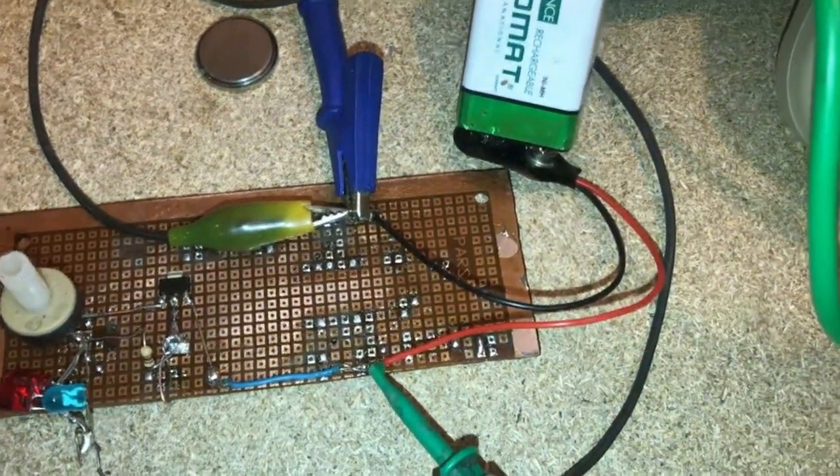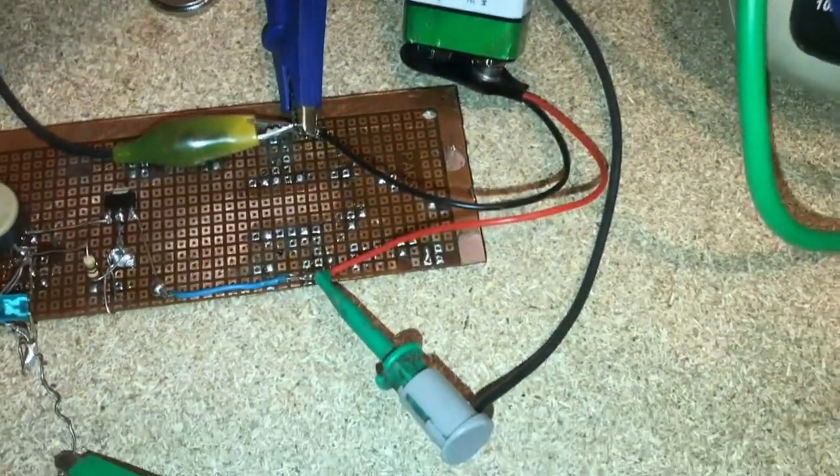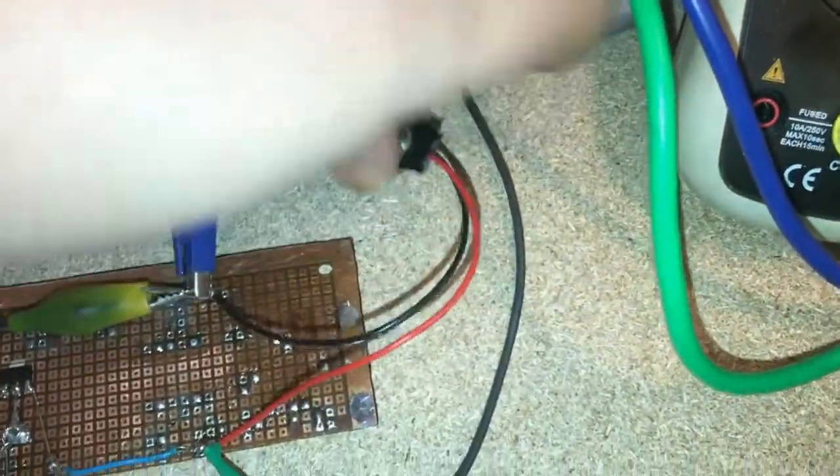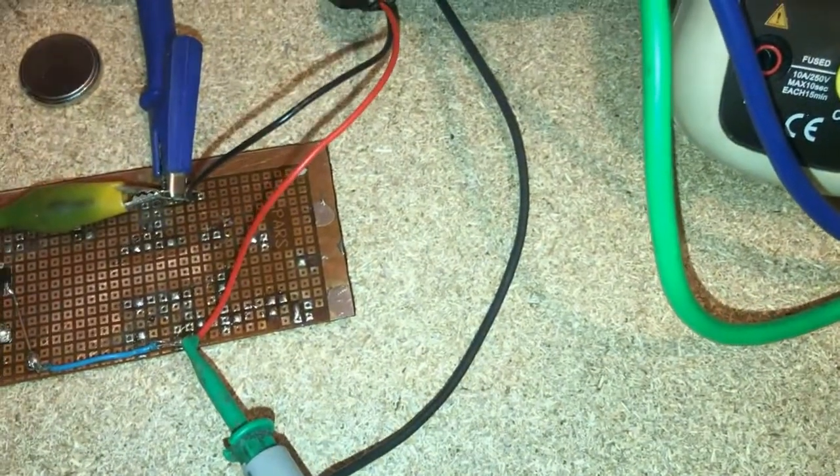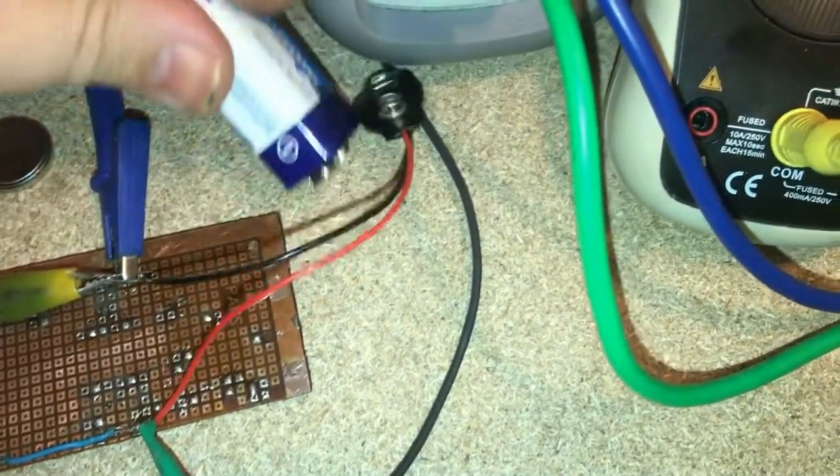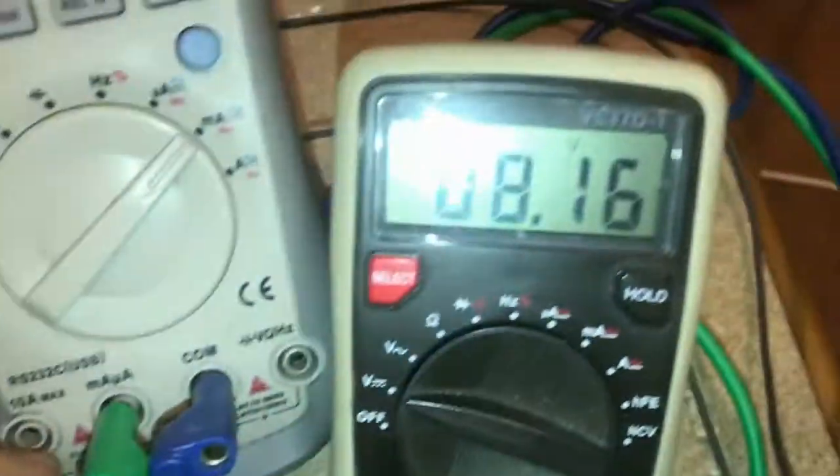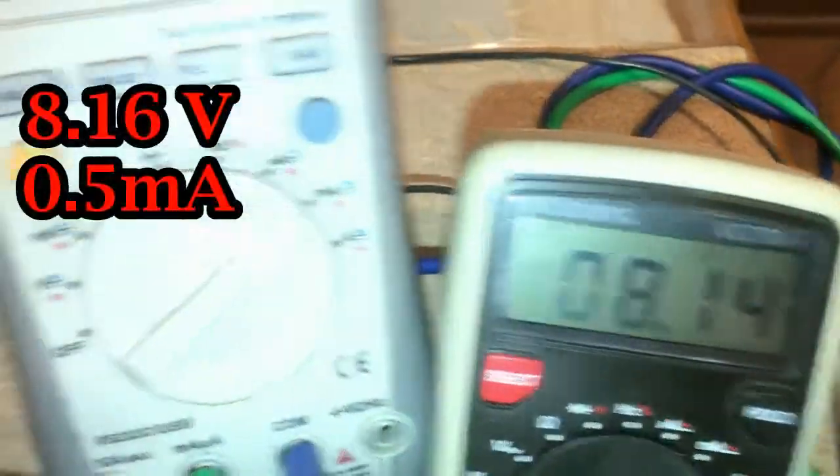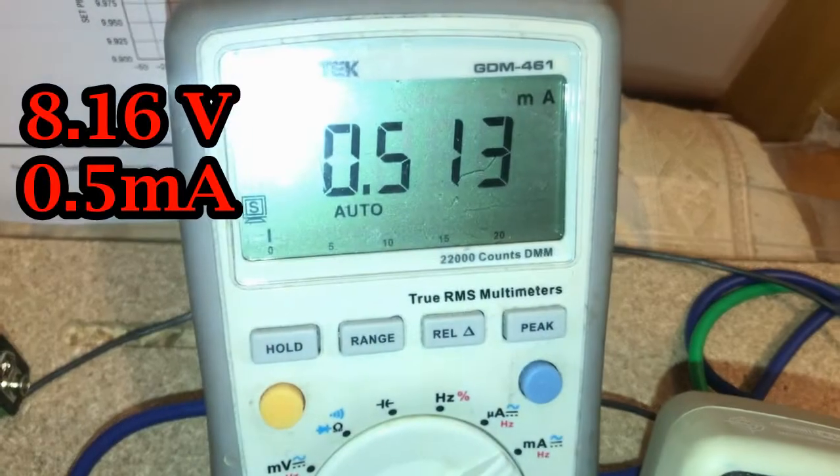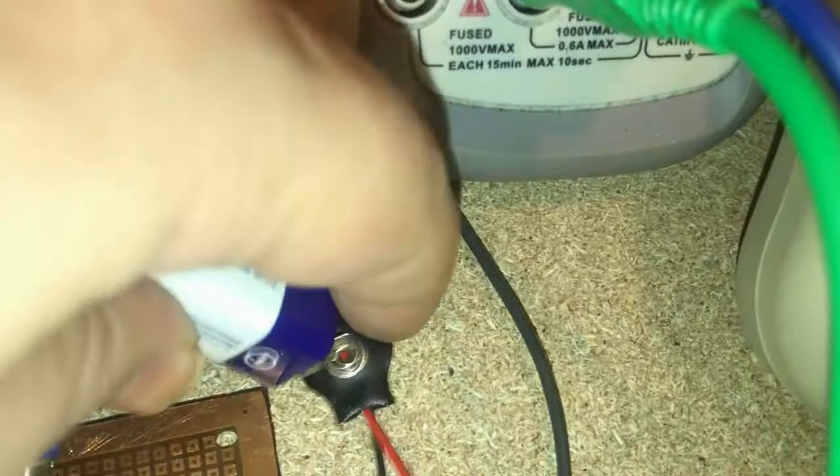And check the current stability. Okay, I will change the 9-volt battery with a used battery. The voltage is 8 volts and the current is still half a milliamp. I'm going for the next battery.